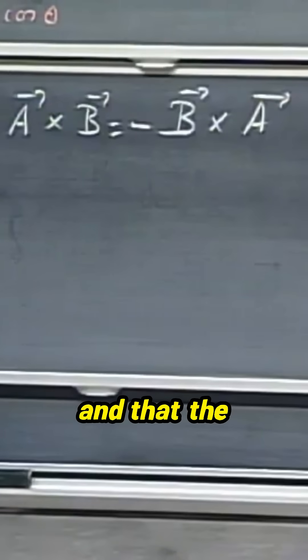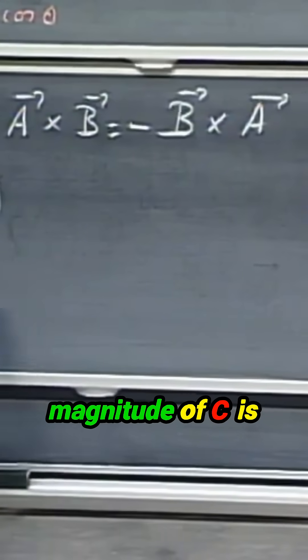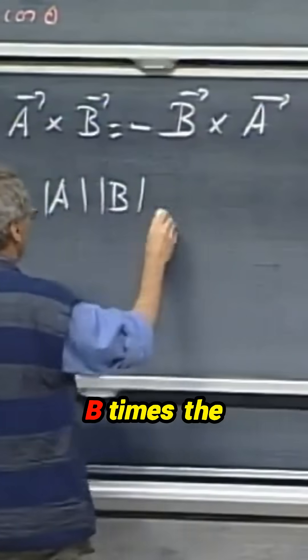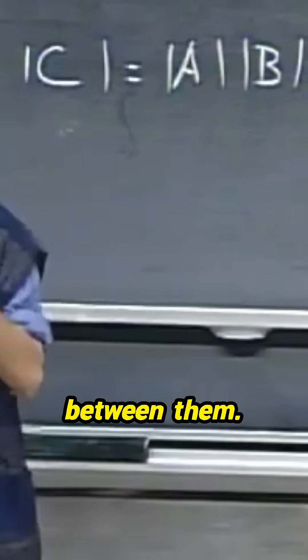And that the magnitude of C is the length of A times the length of B times the sine of the angle between them.